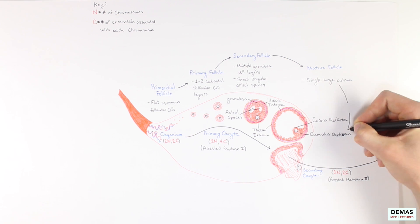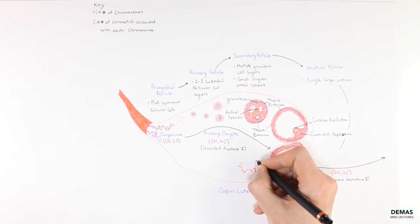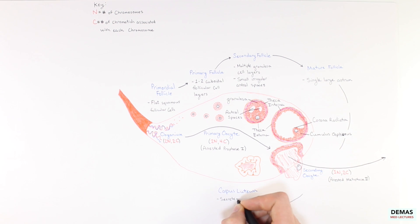Upon release of the secondary oocyte from the follicle, the empty follicle becomes a structure known as the corpus luteum. The corpus luteum is an important structure involved in secreting progesterone which would prepare the uterus for implantation of a fertilized egg.